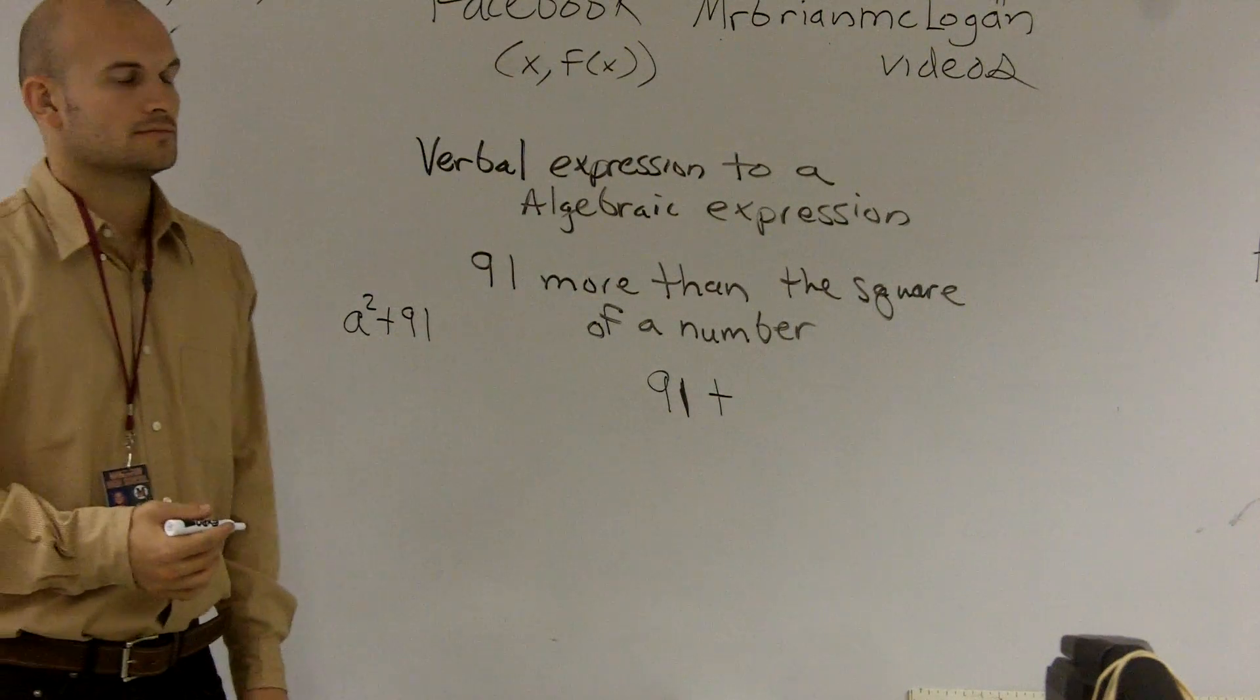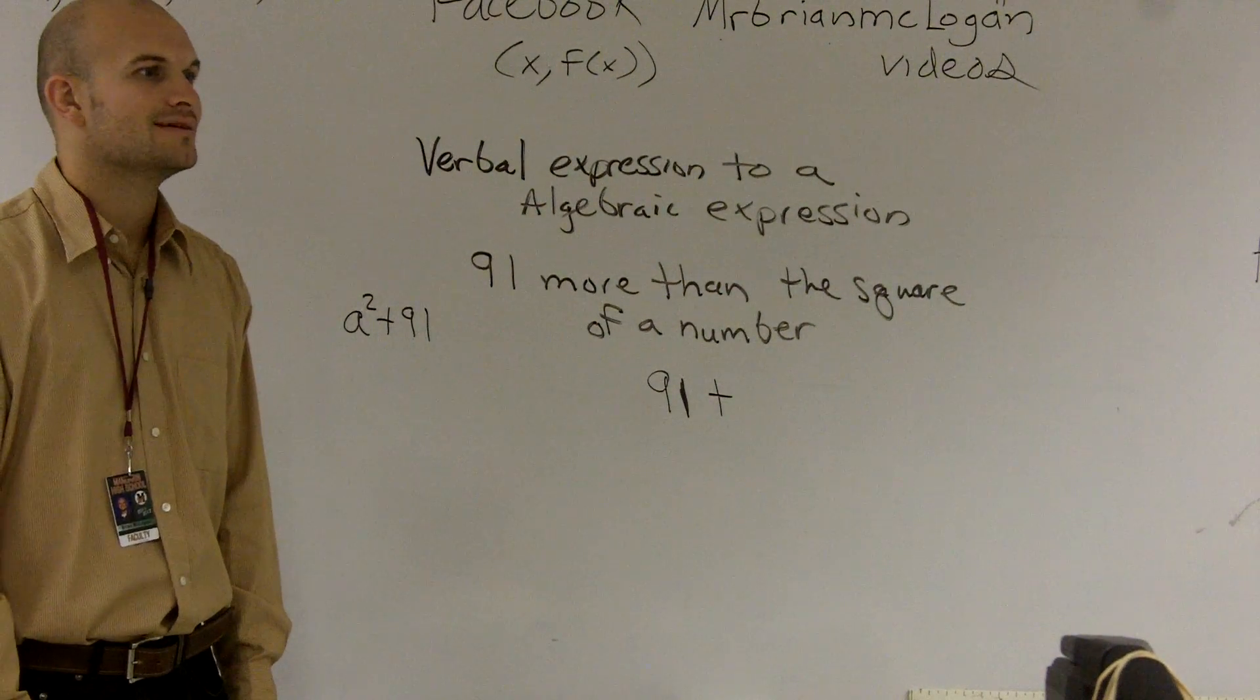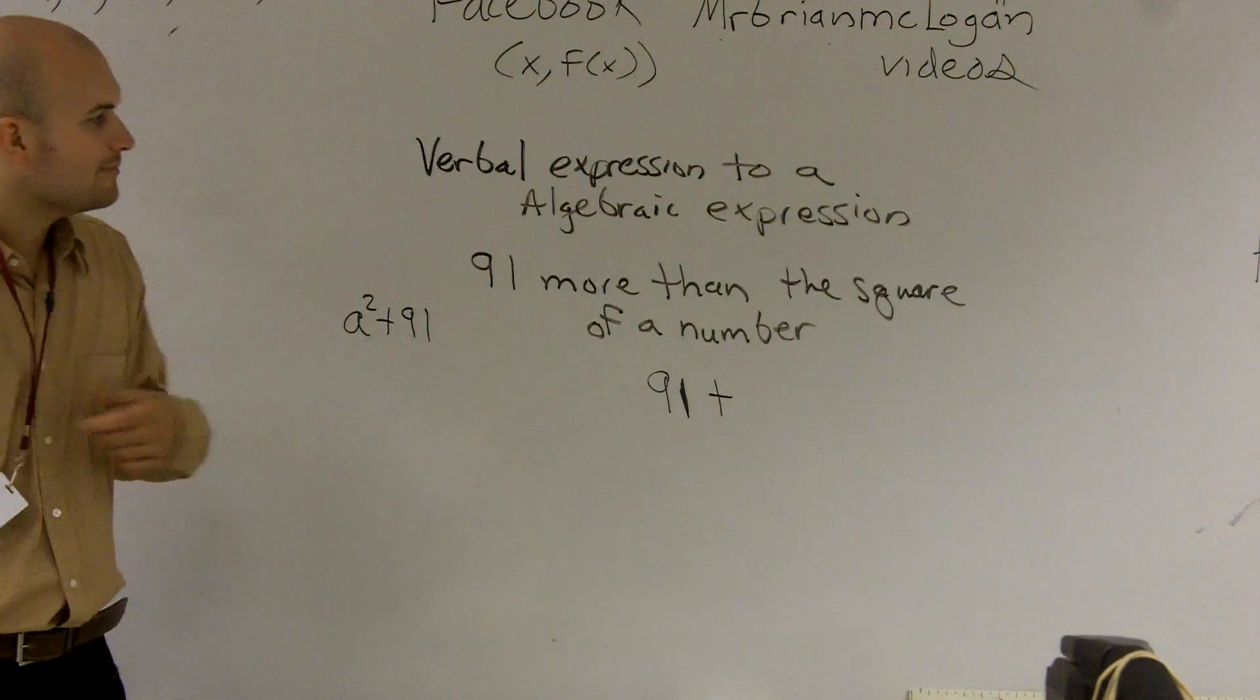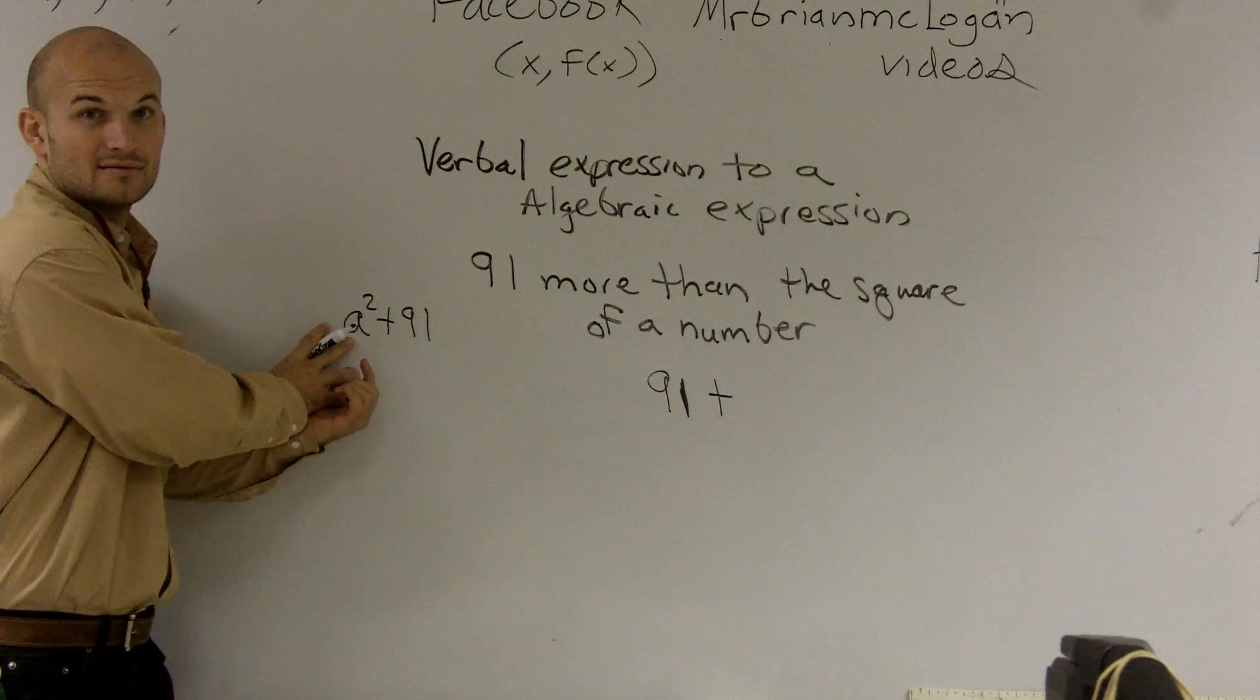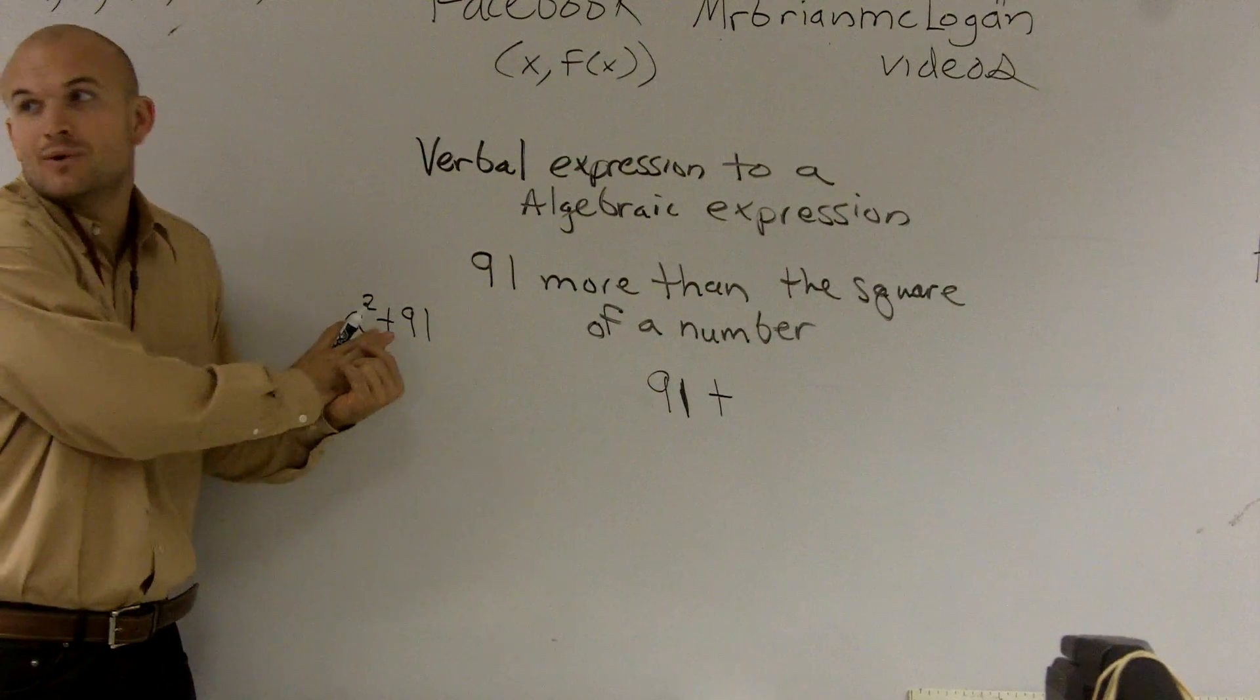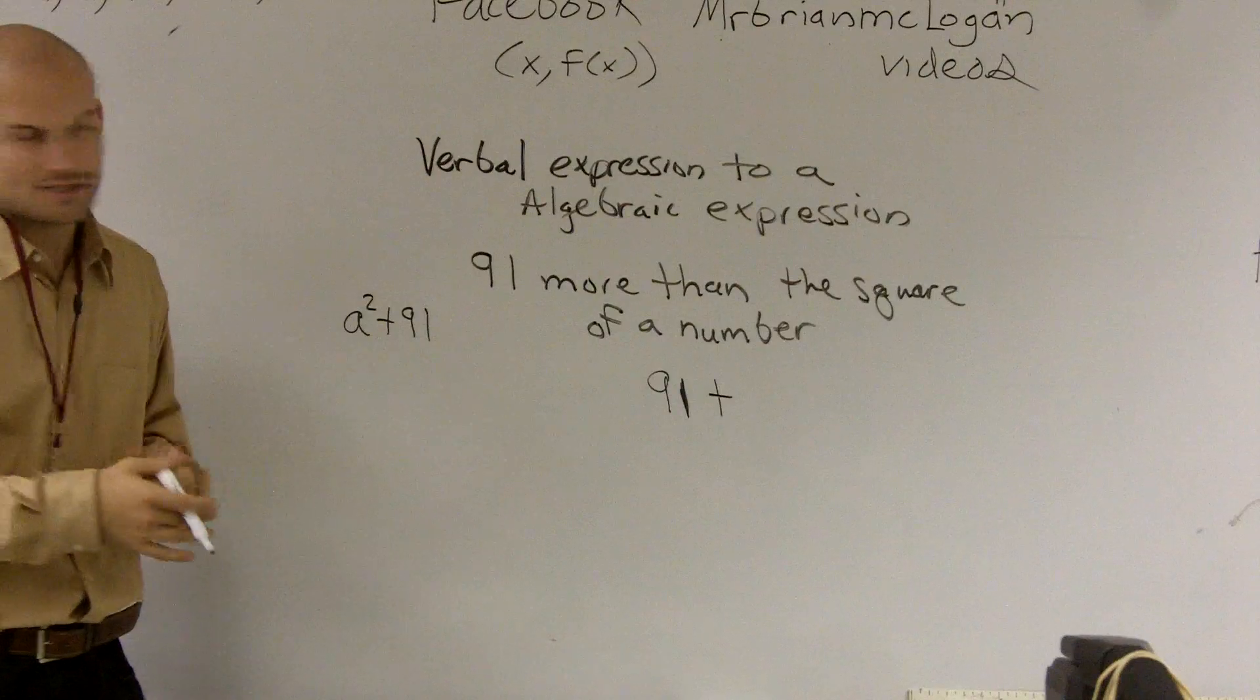It says 91 more than the square of a number. So first of all, we don't know what a number is. And so you chose A, right? Do we choose another number or another variable? Yeah, you can choose anything you want to, right? Variables just represent numbers. So in your case, let's use A.